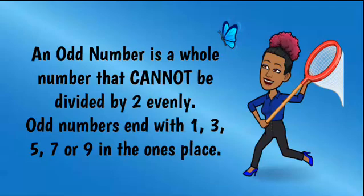An odd number is a whole number that cannot be divided by two evenly. Odd numbers end with 1, 3, 5, 7, or 9 in the ones place.